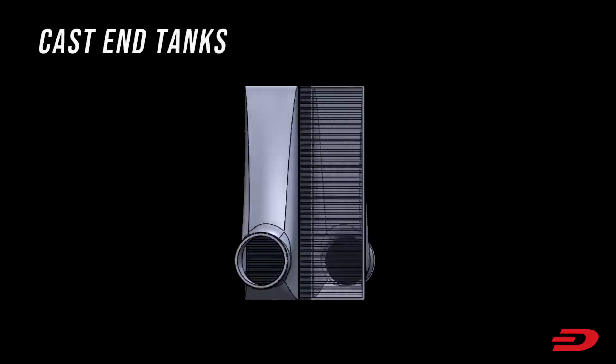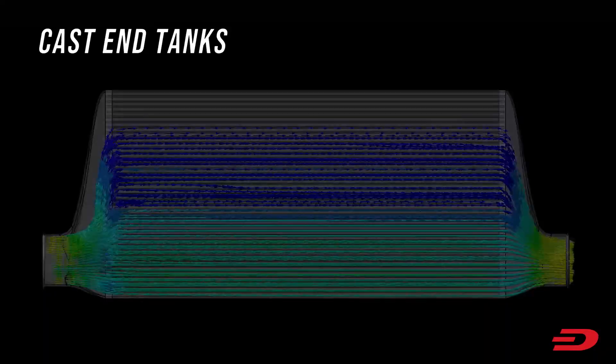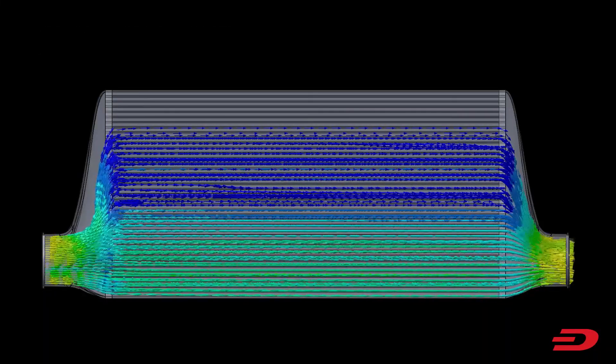This can be prevented by using cast end tanks. These can be designed so that there are no sharp edges and so the air can flow smoothly across the intercooler.